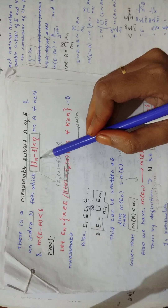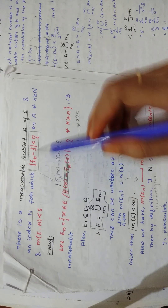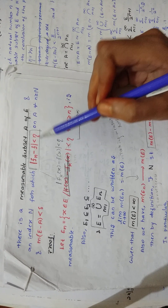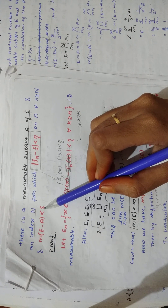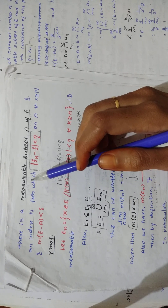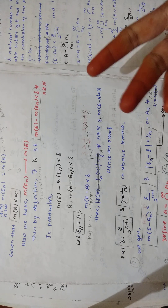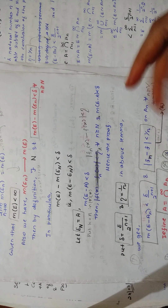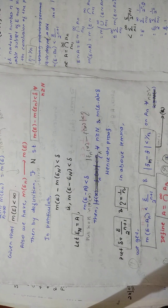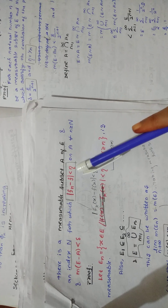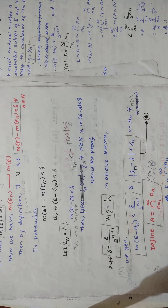You have to prove that lemma because its statement involves eta and delta. In the beginning of Egorov's theorem, you will apply specific values for eta and for delta. So you have to prove this lemma first. Then only can you write, in the proof of Egorov's theorem, put delta equal to epsilon by 2 to the power n plus 1, and put eta equal to 1 by n.